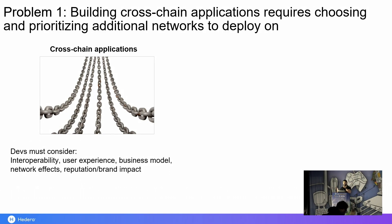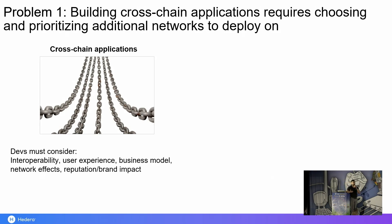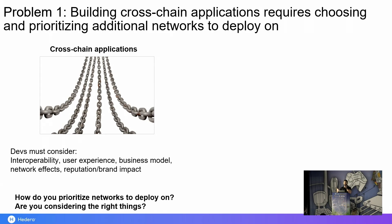But with that deployment of multi-chain or cross-chain applications also comes the challenge of having to choose and prioritize the networks that you deploy on. Those dev teams have to consider a lot of things, among those is interoperability — they have to take into account differences at the technology or the protocol level. Also user experiences: if you want to provide a consistent user experience, you have to understand the nuances, the issues, and the functionality of each one of those networks. You have to consider business models — can you even monetize the dApp with the price and payments mechanisms of the networks that you're targeting? And also other things like network effects and the reputation or brand impact on your application. An application is just as robust and secure and accessible as the network it is deployed on. So if this is something your team is facing, the question is: do you have well-established criteria to help you make that decision, and are you considering the right things?